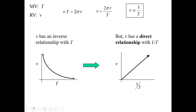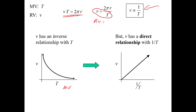Looking at this, I ask: what type of relationship do I have between my manipulated and responding variable? We always want our responding variable equal to everything else, so speed equals everything else. Speed and period have an inverse relationship. If I just graphed manipulated versus responding, I'd get a curvy, decreasing line. But if I graph the proportionality itself — V has a direct relationship with 1 over T — I'll get a nice straight line direct relationship graph.